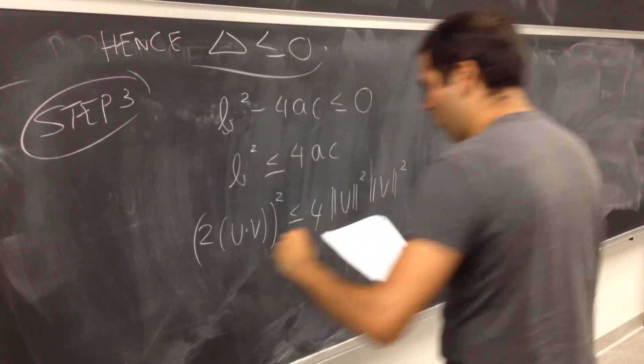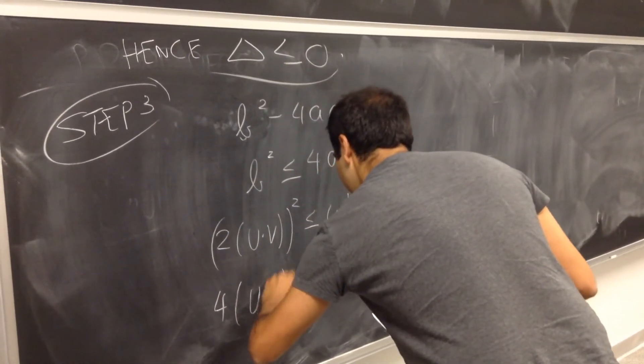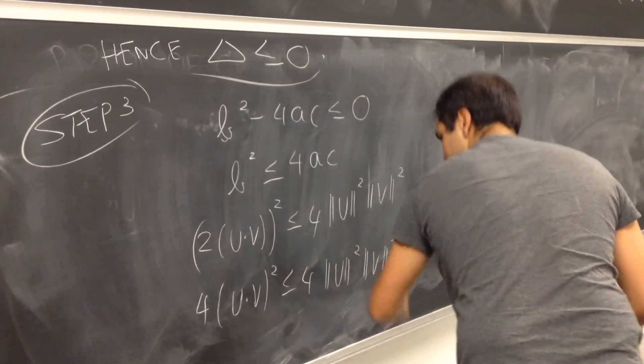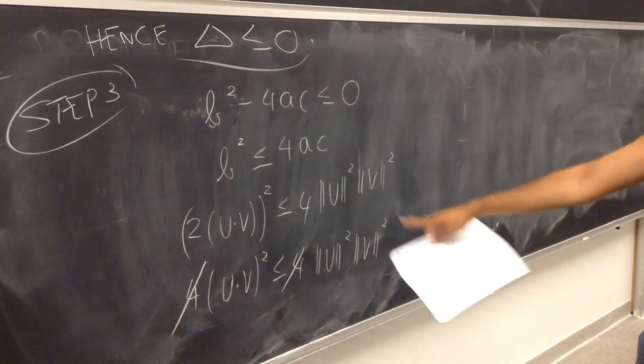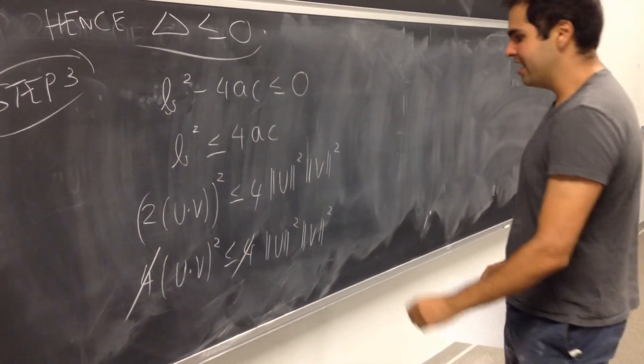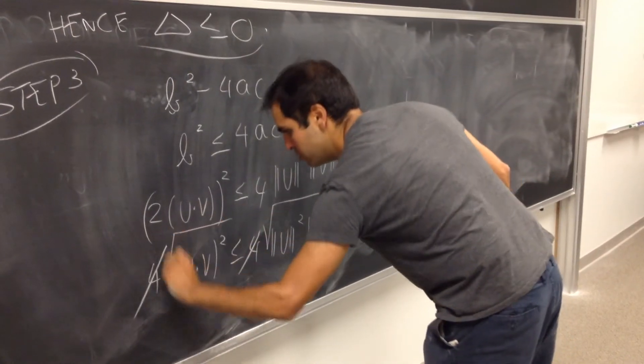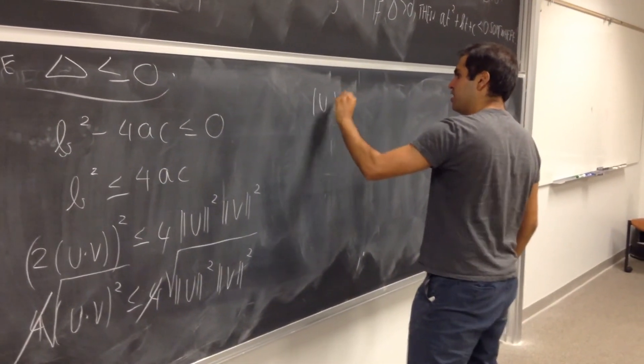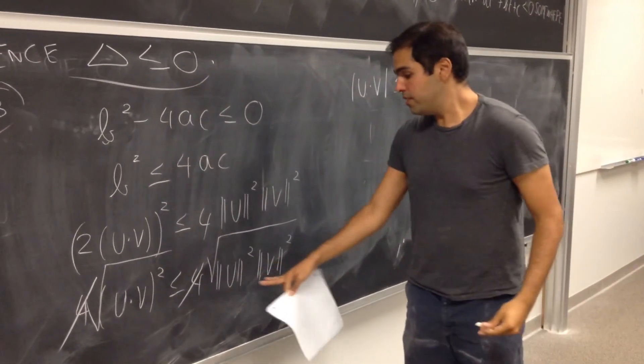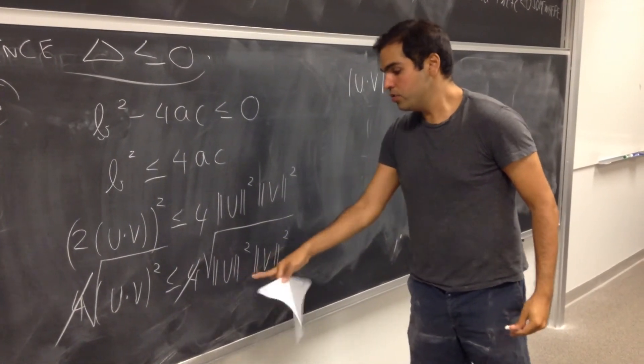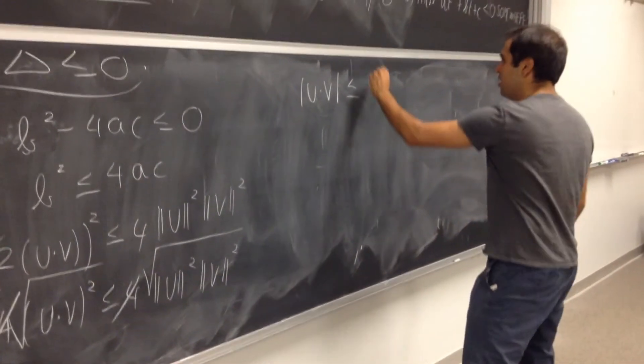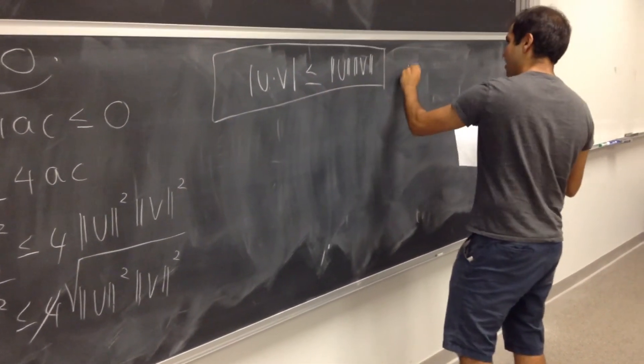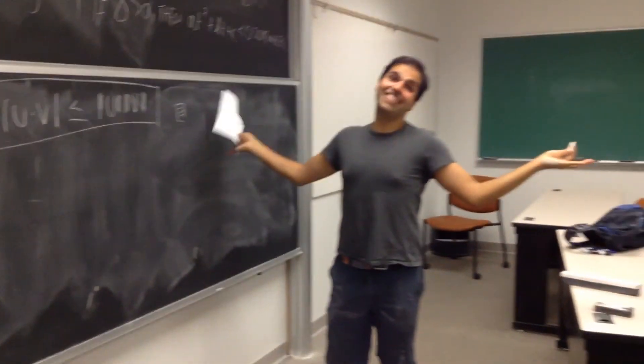2 u dot v squared is less than or equal to 4 u squared v squared. So in other words, 4 u dot v squared is less than or equal to 4 u squared v squared. Take this, you know, the 4 magically cancels out. And then, one thing you can do is just take square roots on both sides. But square root of u dot v squared is the absolute value of u dot v. And square root of u squared times norm v squared. Those things are non-negative. So this becomes norm u times norm v. And then we're done and we can go home happy. Woo!